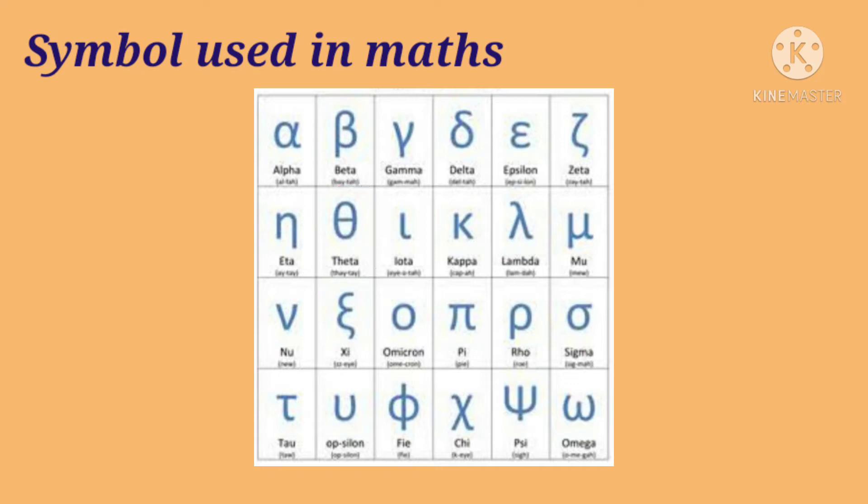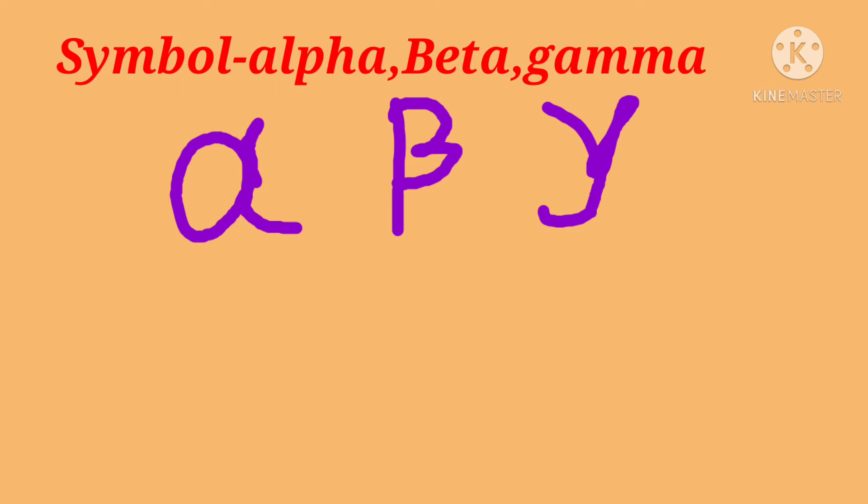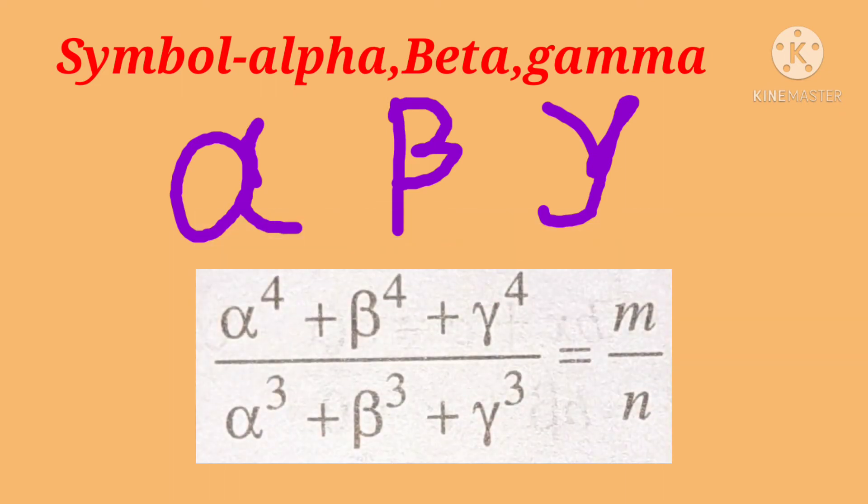Let's see an example with alpha, beta, and gamma. These are Greek letters used in mathematics to denote constant values, such as the roots of polynomials.